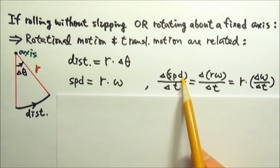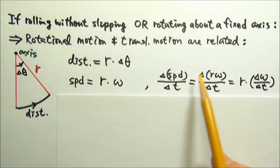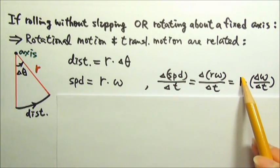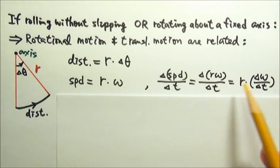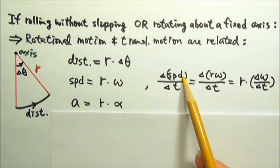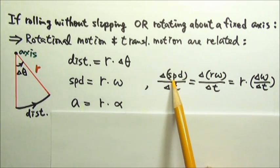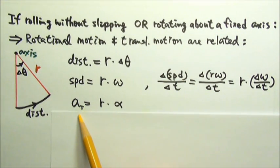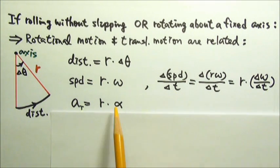Now if I want change in speed divided by change in time, I would replace speed with r omega. R does not change when this thing rotates, so we can factor out the r, and what's left is delta omega over delta t. The rate at which speed changes is some sort of acceleration. Which kind of acceleration is responsible for the speed change? It's the tangential acceleration, which equals r, and of course delta omega over delta t is alpha.